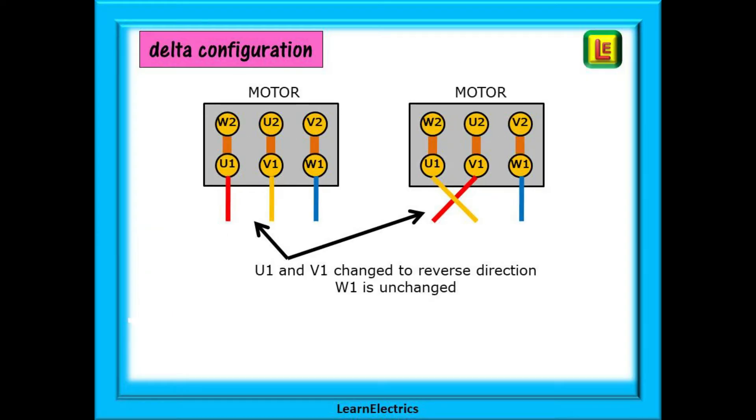If the motor is configured for Delta connections then we can do exactly the same. Leave the links as they are and swap any two incoming phases. This will change the direction of rotation. Just swap any two and leave the third as it is.